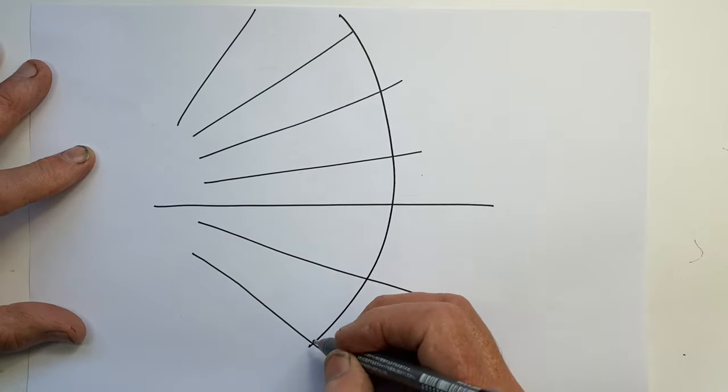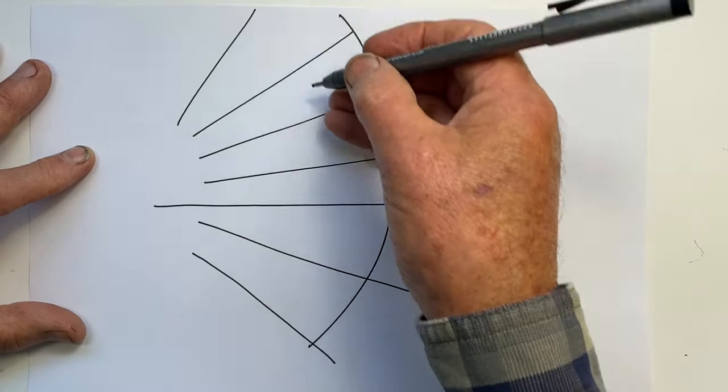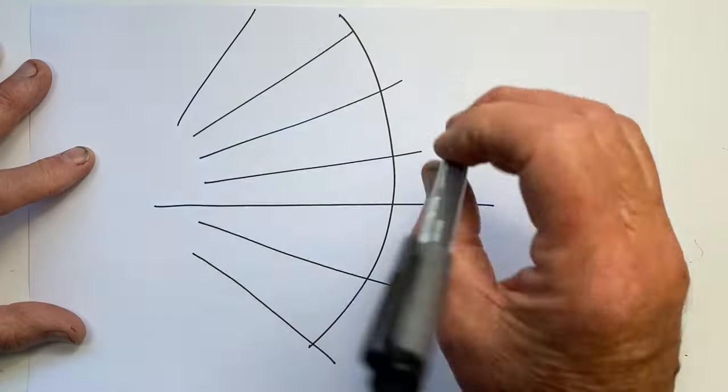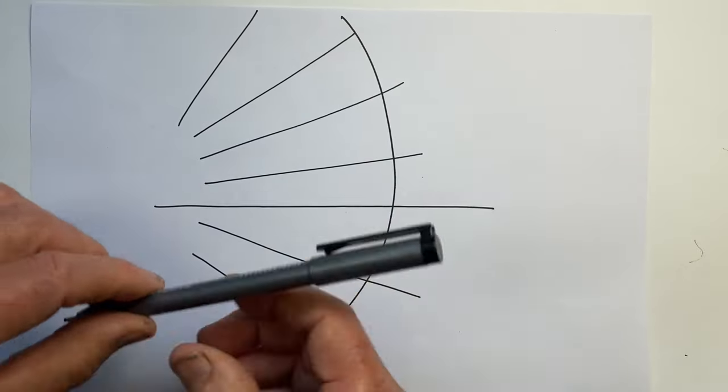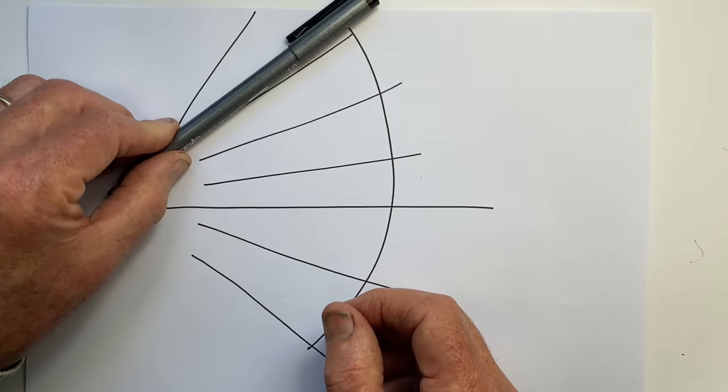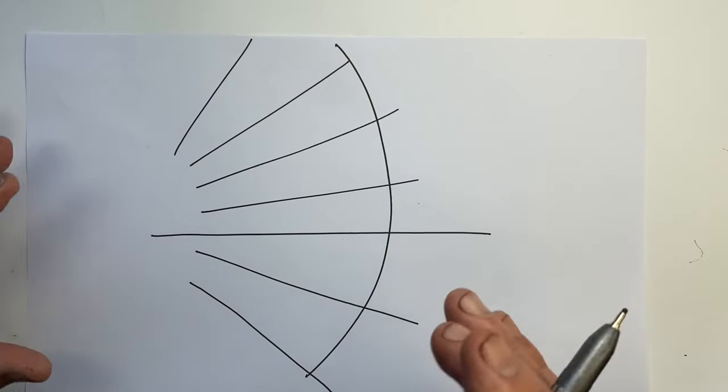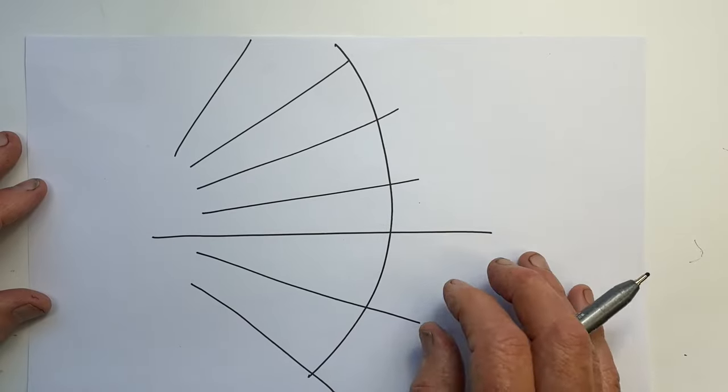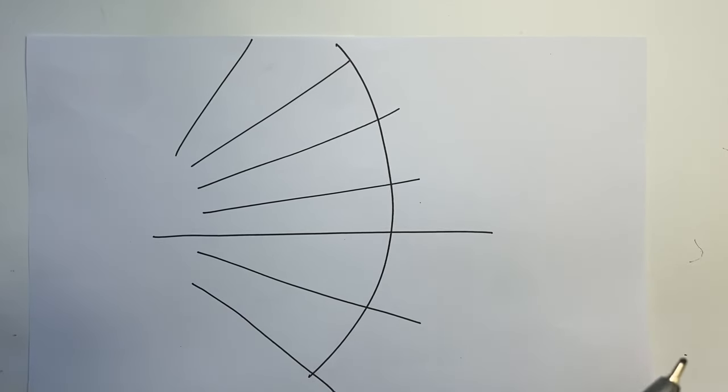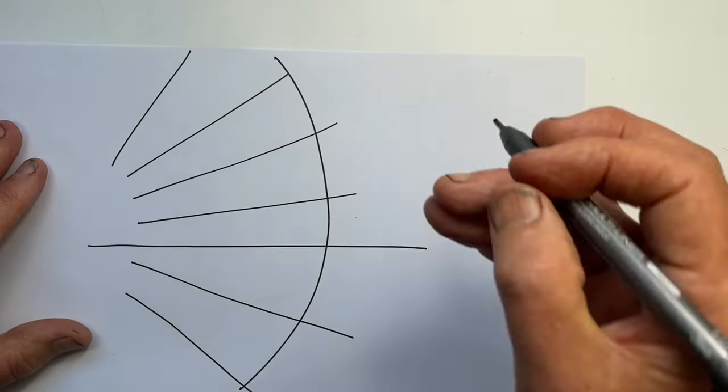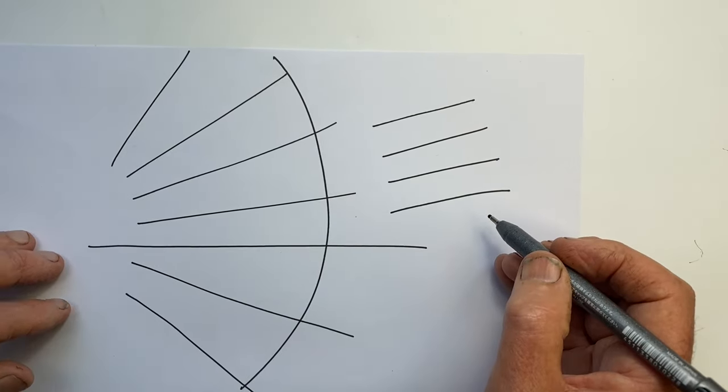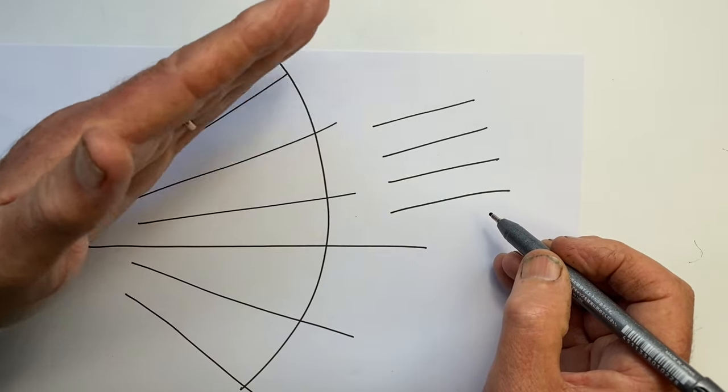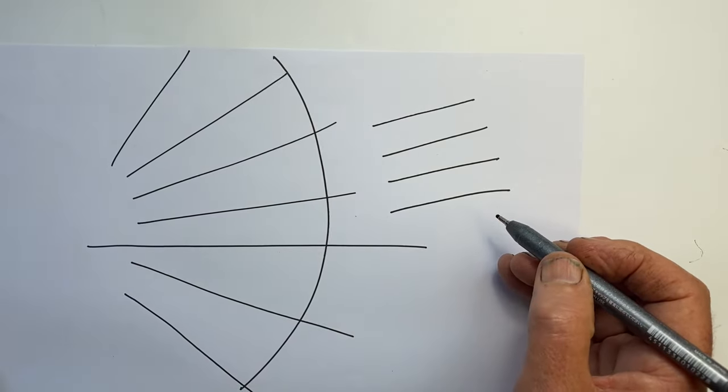And this creates a fan pattern of these lines that fan out with an increasing steepness of angle. And that's the pattern we need to look for in our reference and the pattern we need to put into our lines when we draw. Not to make the mistake of parallel lines, but to always create the fan pattern in our lines.